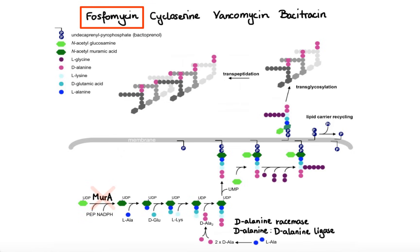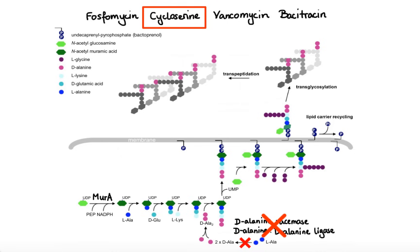Cycloserine comes into play at the next crucial step of the synthesis. Because of its chemical resemblance to D-alanine, cycloserine competitively inhibits both D-alanine racemase and D-alanine-D-alanine ligase. When both of these enzymes are inhibited, D-alanine residues cannot be formed and previously formed D-alanine molecules cannot be joined together. Again, the formation of the peptidoglycan precursor is disrupted, which eventually leads to death of bacteria.